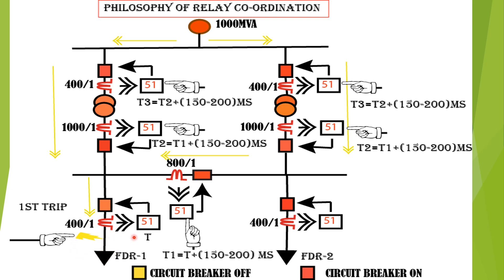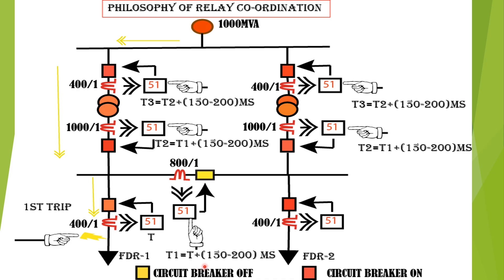Now consider that this relay is unable to clear the fault due to a breaker problem or trip circuit problem. The fault current will still flow from both sides of the transformer. After T plus 150 to 200 milliseconds, a time margin is provided for the bus coupler overcurrent relay to send a trip signal to the bus coupler breaker. Since the fault occurs in this section of the bus, after tripping of the bus coupler breaker, the fault is segregated from the bus and the healthy feeder power is not interrupted.